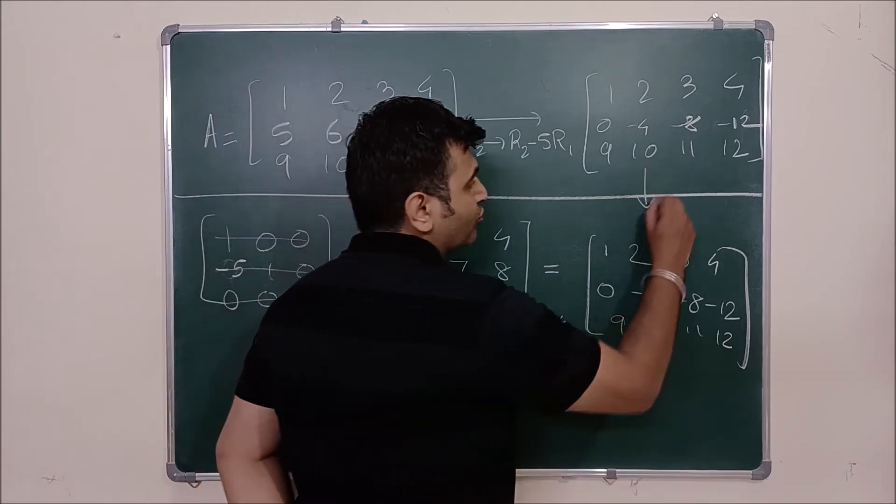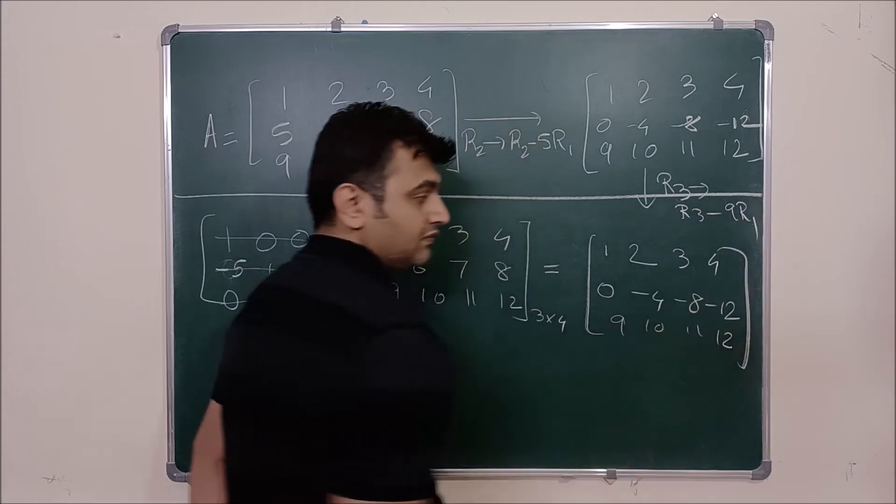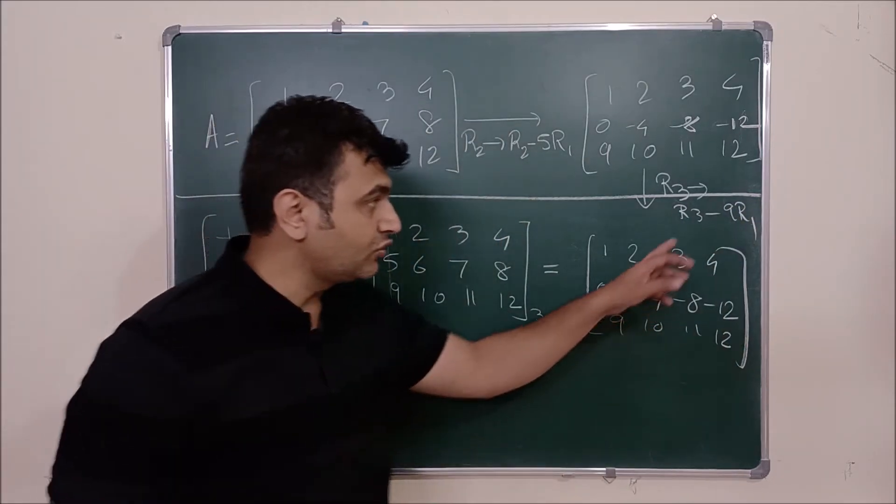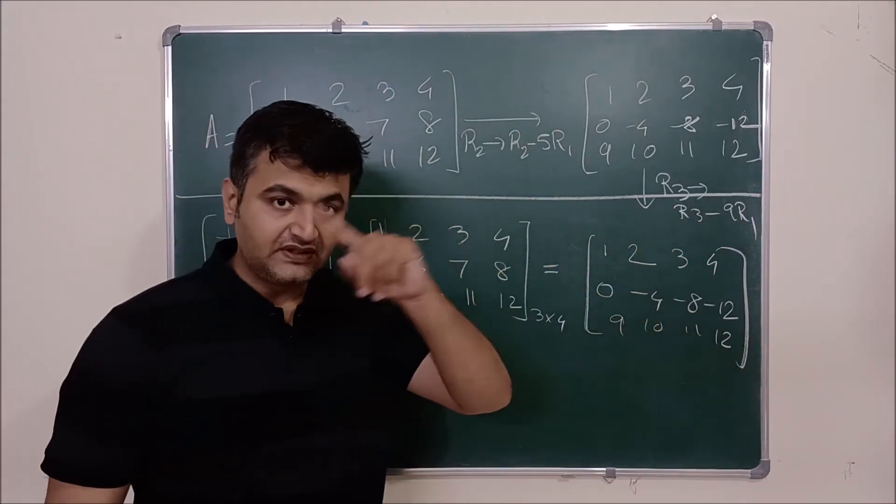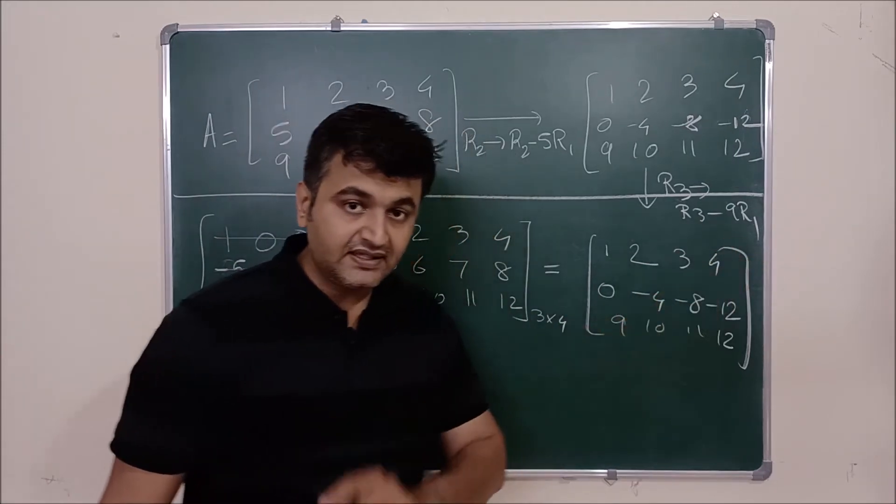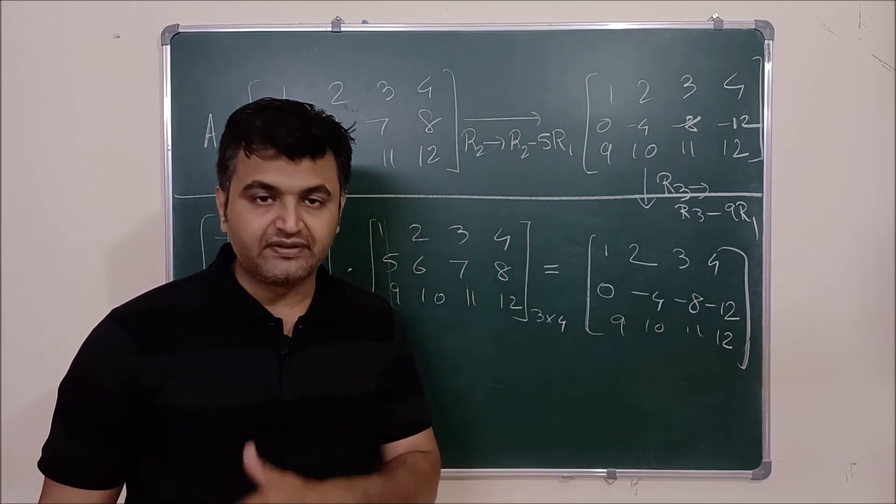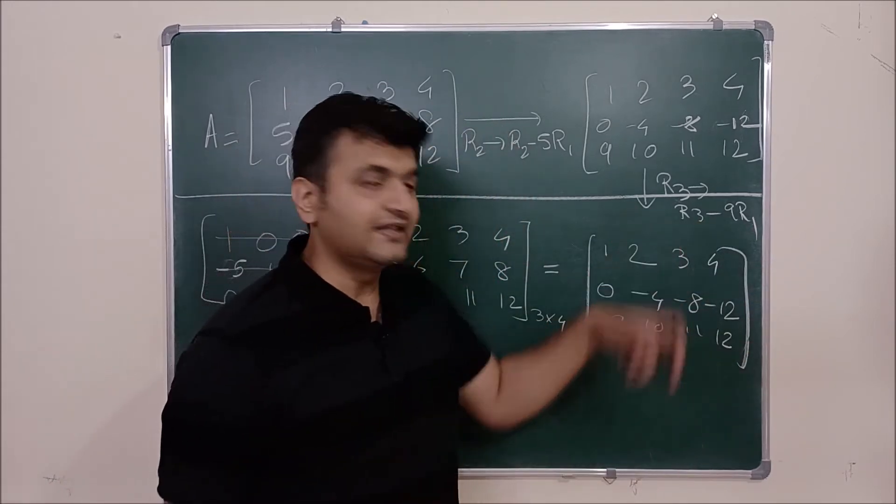Now suppose here if you want to do R3 changes to R3 minus 9 R1. Now you do this operation on identity matrix. So 1 0 0, 0 1 0 and R3 minus 9. So minus 9 0 1. And now you multiply this matrix by this matrix that we got. And you get the same answer.